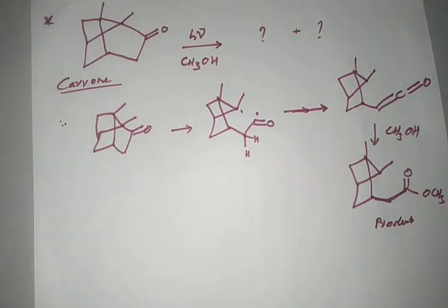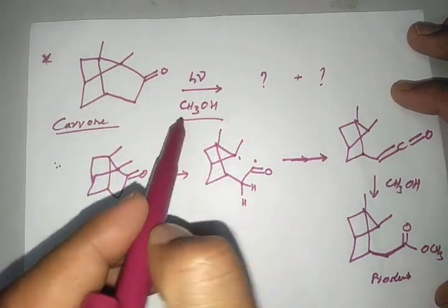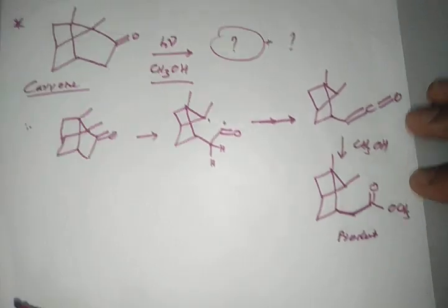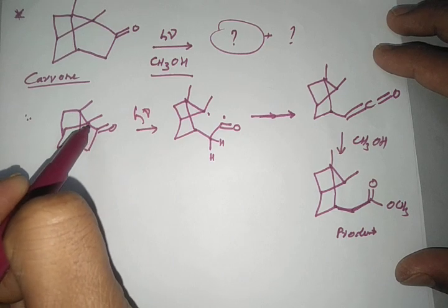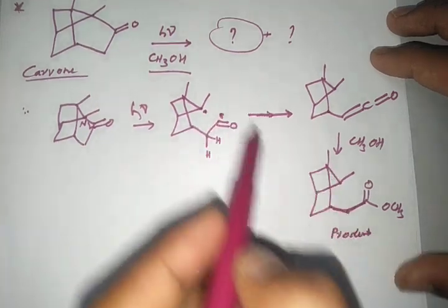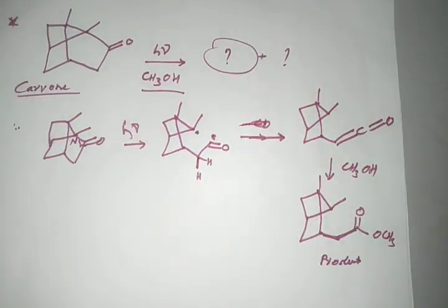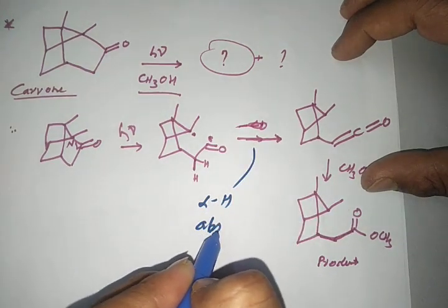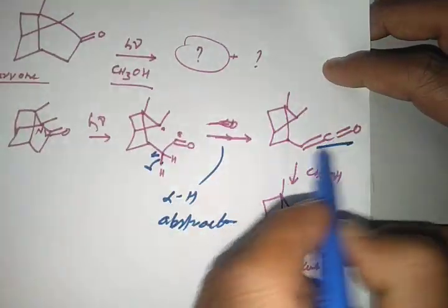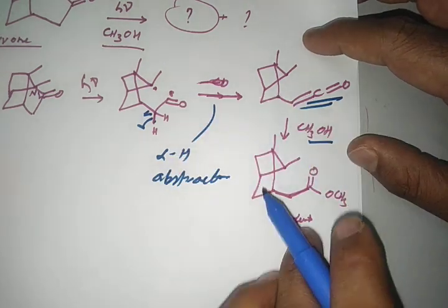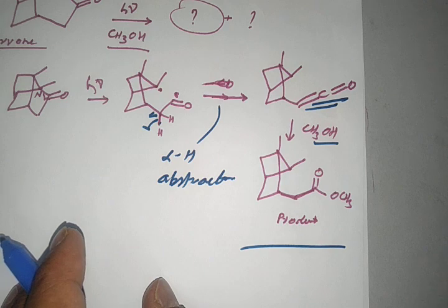The next example involves an important natural compound. When irradiation is performed on this compound in methanol, we follow the mechanism: irradiation causes bond breakage to form the most stable radical, followed by decarbonylation. Alpha hydrogen abstraction takes place — homolysis occurs, the hydrogen is taken, and ketene is formed. When methanol is added, an ester product is formed. This is a well-known reaction. That concludes the Norrish Type 1 photochemical reaction; more examples will follow in the next lecture.